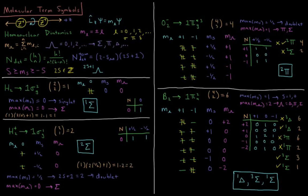This video will discuss term symbols for homonuclear diatomic molecules. For a homonuclear diatomic, we have two nuclei that both have the same charge, and we have this internuclear z-axis connecting the two of them.